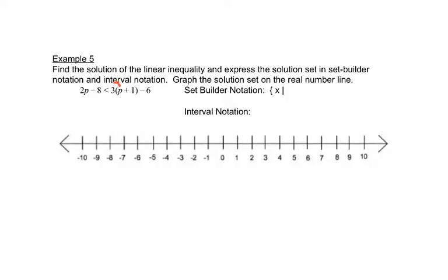So in this example, the first thing we need to do is get rid of these parentheses by distributing. So we would have 2p minus 8, keep that less than, and then 3 times p is 3p, and then 3 times 1 is 3, and we'd still have minus 6.